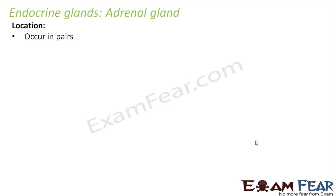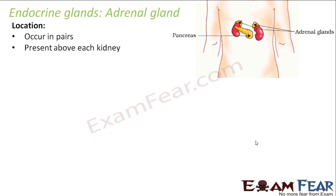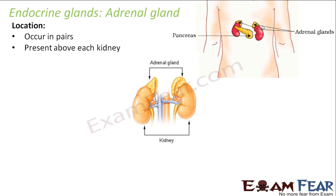Where is it located? They occur in pairs and are present above each kidney, so we have two adrenal glands, one above each kidney. Here you can see the red colored kidneys, and just above the two kidneys we have the yellow colored adrenal glands. On a close look, the adrenal glands appear to be attached above each kidney.